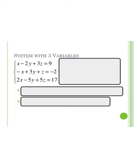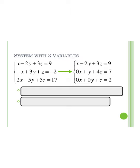Here we have an example of a system with three variables. For our three equations, we have an x, a y, and a z. Our goal is to try and eliminate variables so we can solve for one of them. Usually the process is to eliminate x and y and solve for z, making it look more like our system on the right. With a 0 for x and a 0 for y, we can see that z equals 2.